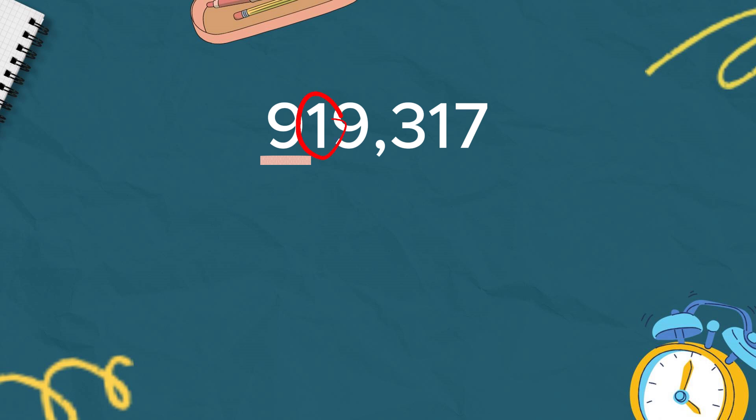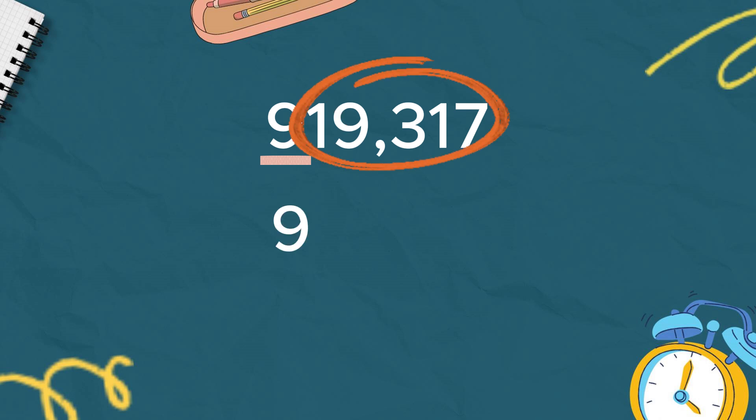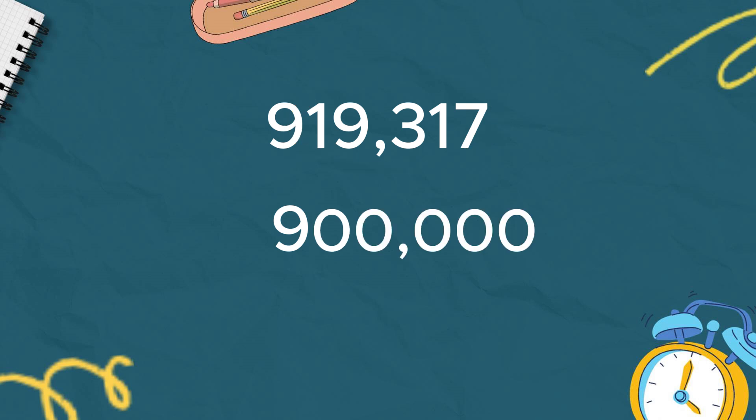All digits to the right of the rounding digit are changed to 0. The digit to the right of the rounding digit is 1, which is less than 5, so we do not change the rounding digit. We write 9, and all digits to the right are changed to 0. The answer, when rounded to the nearest hundred thousand, is 900,000.